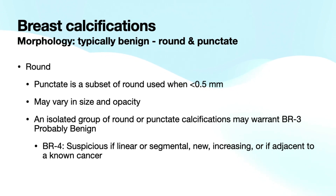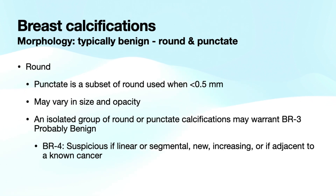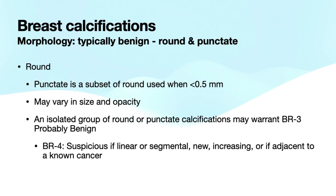We're going to start with round calcifications. Round calcifications can be split between round and punctate. Punctate is technically a subset of round calcifications when the individual calcifications are less than half a millimeter in diameter. Round calcifications can vary in size and opacity. An isolated group of round or punctate calcifications can occasionally warrant a BI-RADS 3 probably benign descriptor — that's the only example of calcifications meeting a BI-RADS 3 descriptor given in the BIRADS manual. However, round and punctate calcifications can also be suspicious if they're in a linear or segmental distribution, if they're new or increasing, or if they're adjacent to a known cancer — in those cases, they should be biopsied.